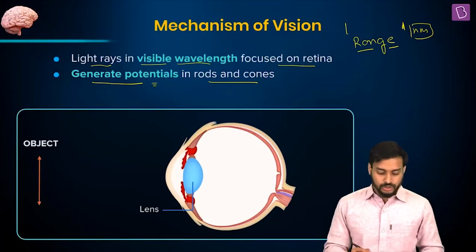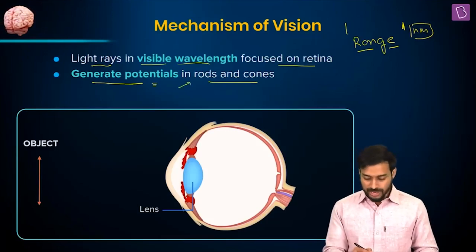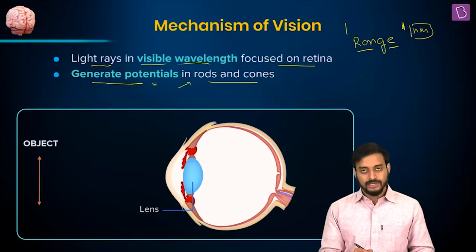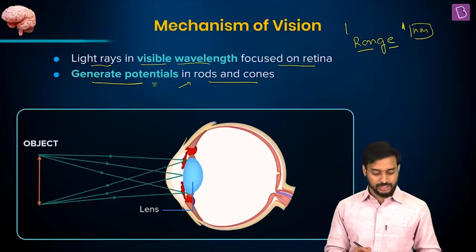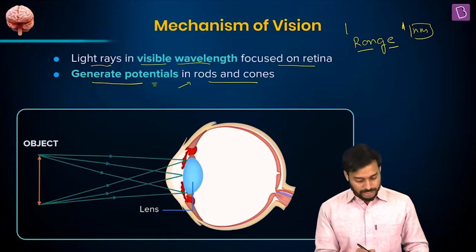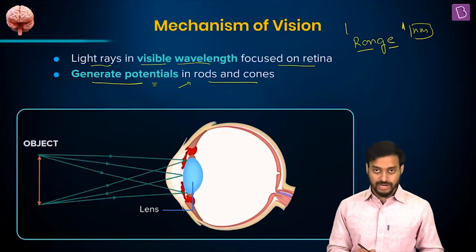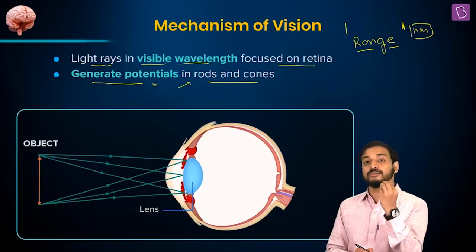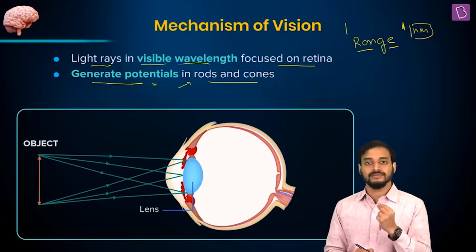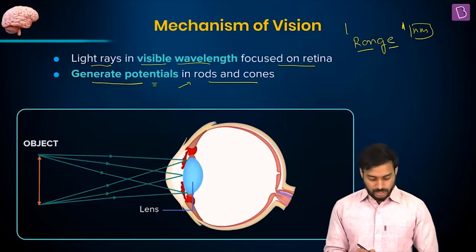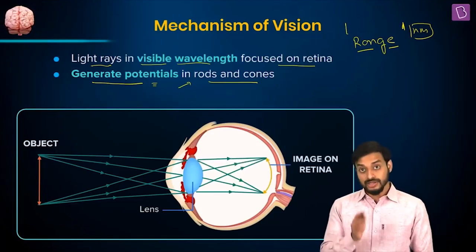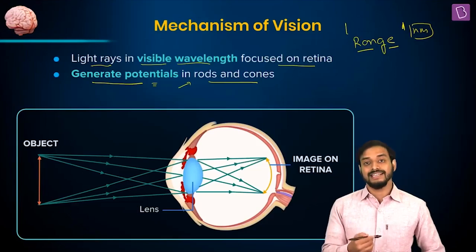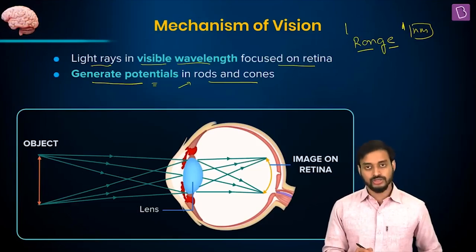So it generates potentials in the rods and cones — generating a potential means generating an impulse. The light rays enter through the lens into our eyes, and how much light is allowed in is decided by the movement of the pupils. When light merges on the retina, we are able to see.